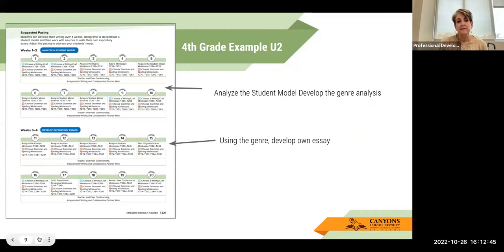Here's a fourth grade example of what that would look like behind the green tab. Here you have the two weeks and then in weeks three through four, finishing up those items where they use the genre and develop their own essay. If you only spend two weeks on a prompt, they will give you another prompt that you can also select. There are two prompts.